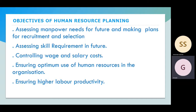The second objective is assessing skill requirements in the future — if we have skilled persons available, we can place them appropriately. The third is controlling wage and salary costs, so our expenses will not be excessive. The fourth is ensuring the optimum use of human resources in the organization — our skilled people are assets and should be used optimally, not exploited or left idle. The fifth is ensuring higher labor productivity — if a person is skilled, labor productivity will naturally increase.